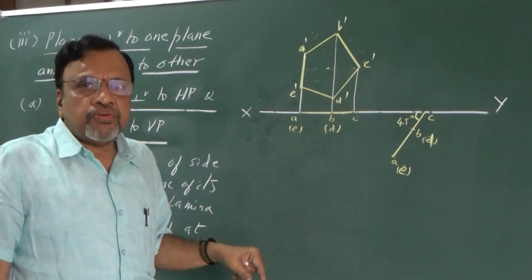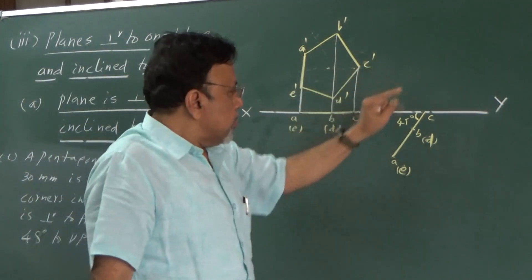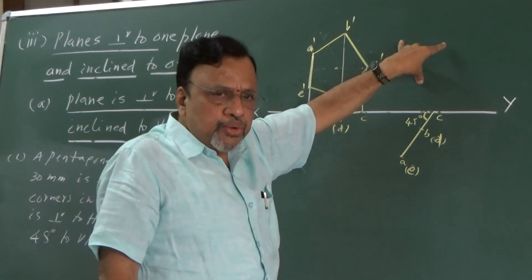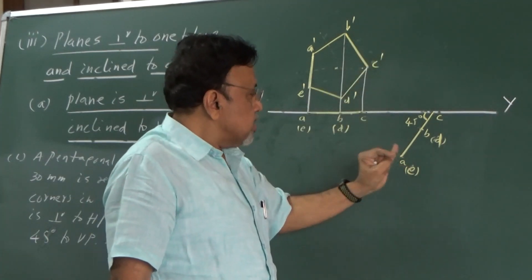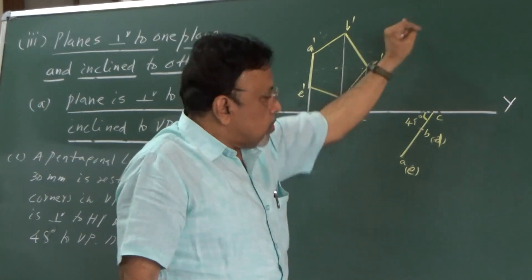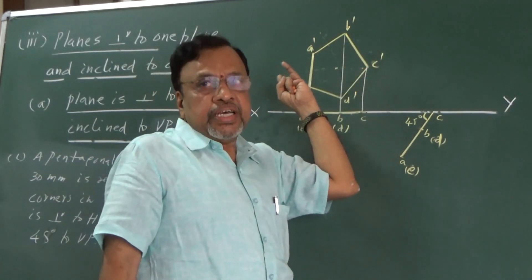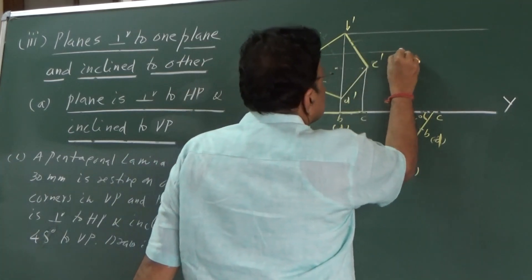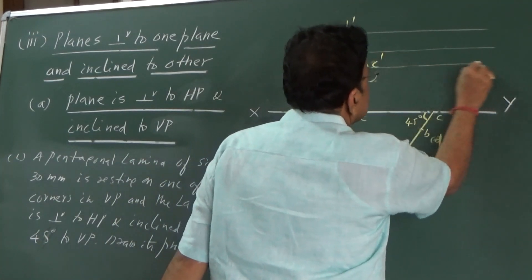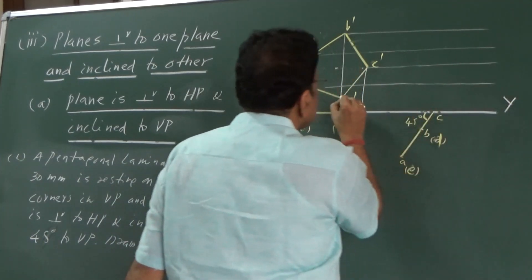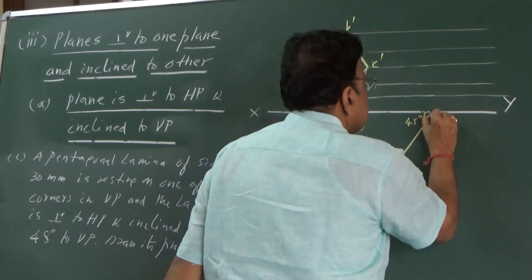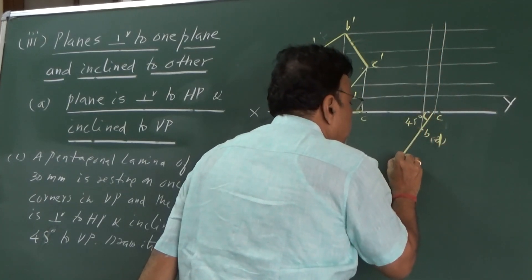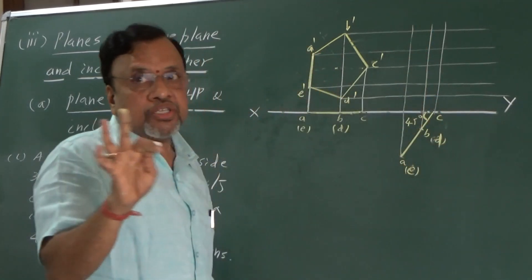Now I need to get the new front view. In the new front view, since the lamina is inclined to VP, the front view should be smaller in size. To get the new front view, draw the projectors from the new top view and draw the other projectors from the previous front view. Always remember that statement. Draw all the projectors — projectors should be drawn as lightly as possible.